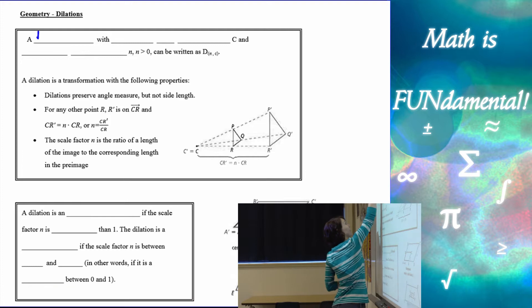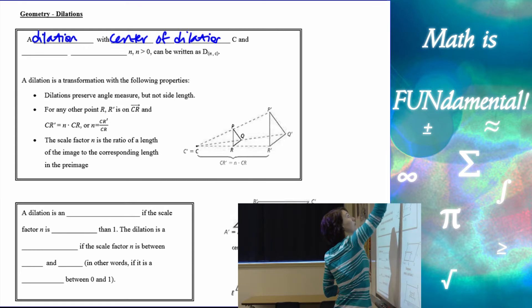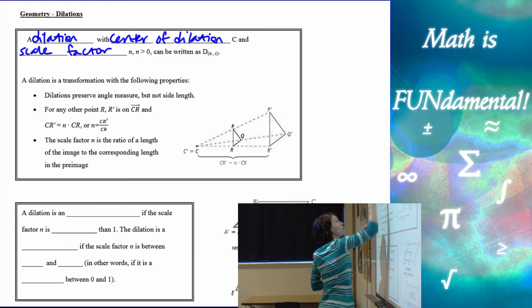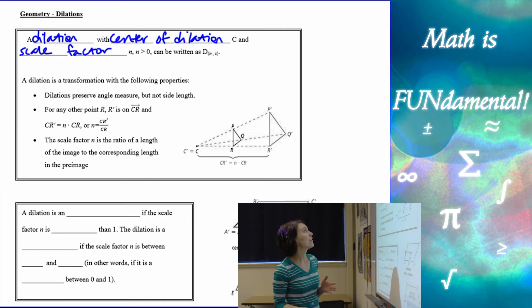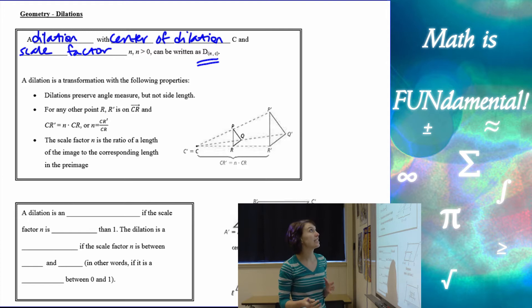A dilation with center of dilation C and scale factor N, where N has to be positive, can be written as D and then parentheses N comma C. And of course, we'll always tell what our pre-image and our image are.